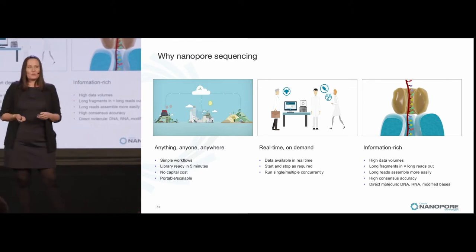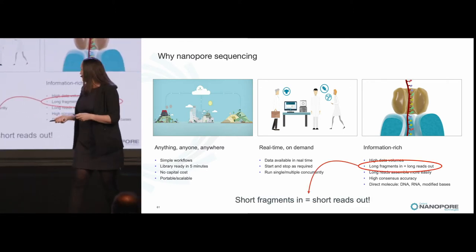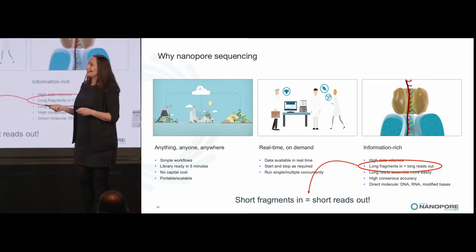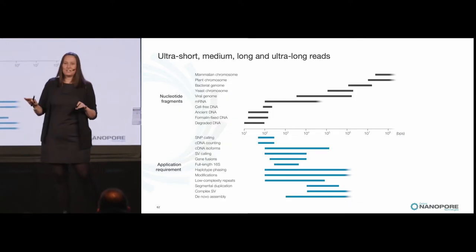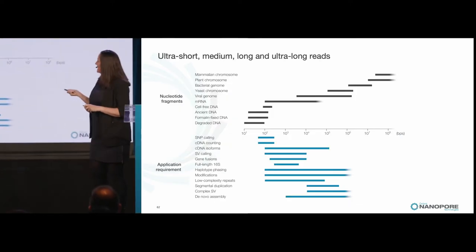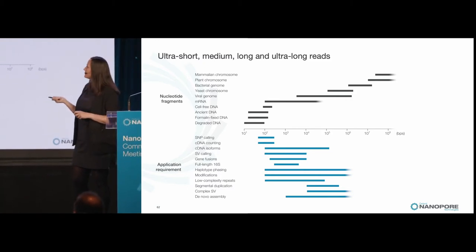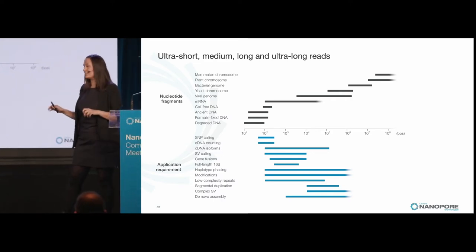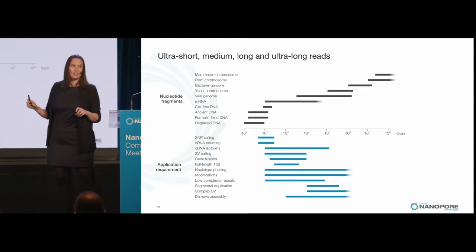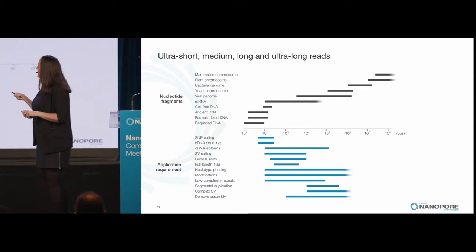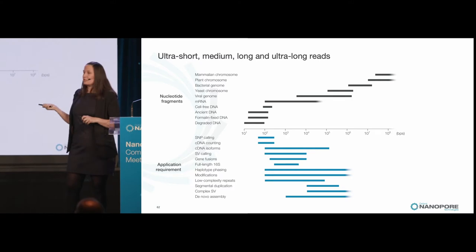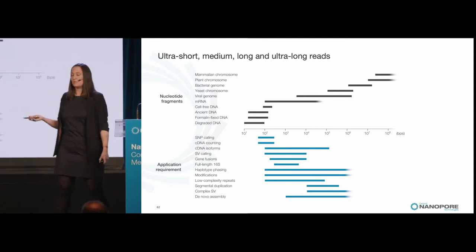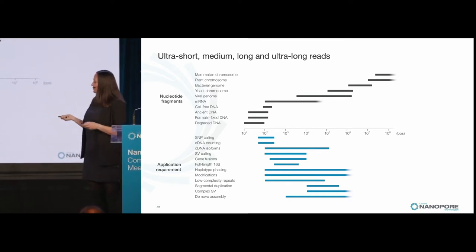There's no reason why you'd only sequence long things on nanopores. Whatever fragments you put into the nanopore are the reads that you're going to get out. I tried to summarize this in a graph showing how many bases you have on one axis, and what kind of samples and read lengths those might have. This spans the whole area — things that are really short and things that are really long. Below, I put up some of the major applications people might want to use nanopore sequencing for, which also ranges a lot in length.